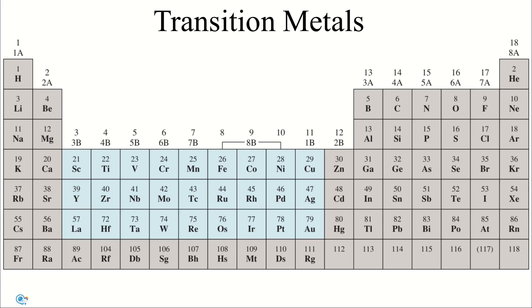Transition metals. A series of elements in the periodic table in which the D and F subshells are gradually filled are called the transition metals or transition elements.